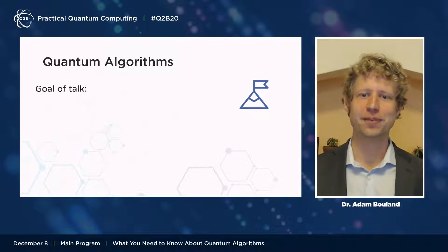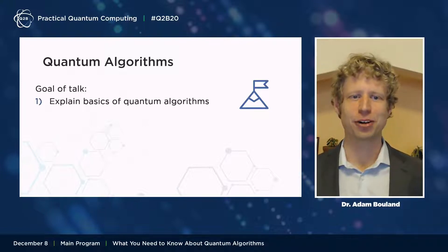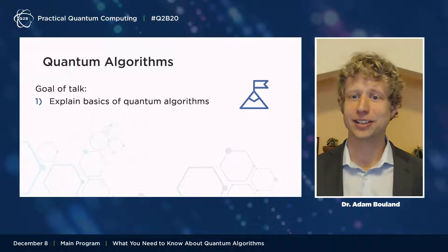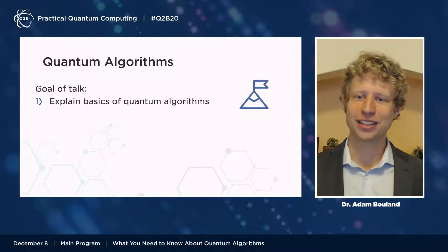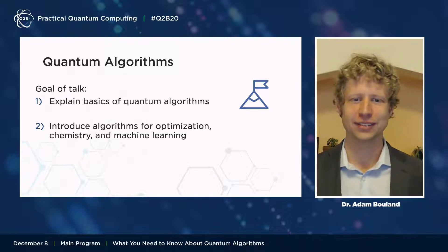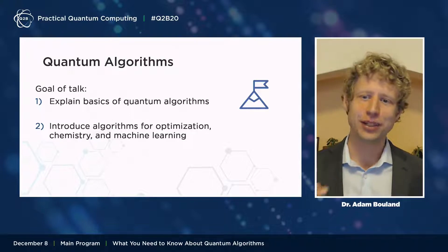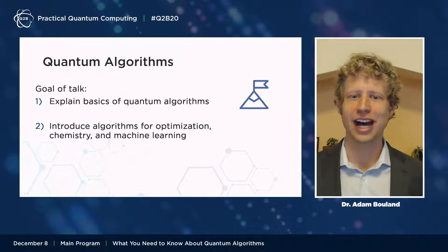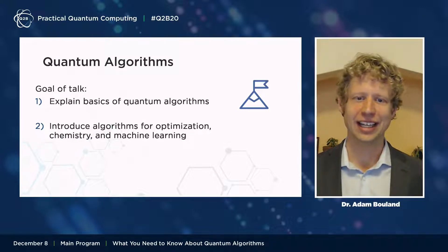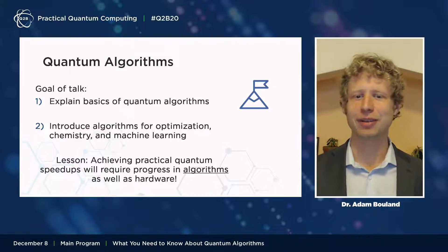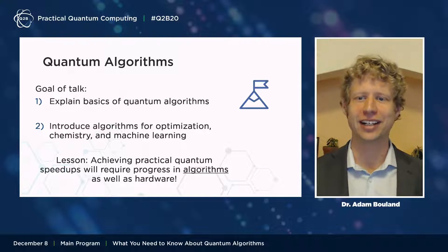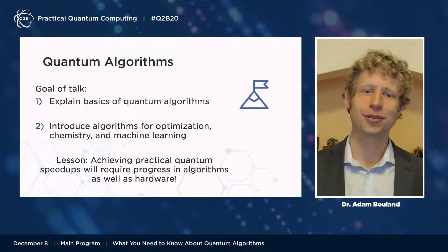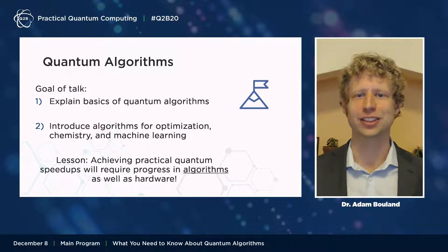In this talk I'm going to tell you about some of the basics of quantum algorithms — namely the notions of speedup and the ideas of exactly how much quantum hardware is going to be required to run these algorithms. I'm also going to briefly introduce some of the fundamental algorithms for optimization, chemistry, and machine learning. In all of these application areas, if we want to achieve a practical speedup with a quantum computer, this will require progress in algorithms as well as in hardware.